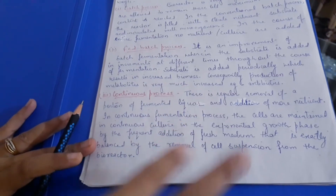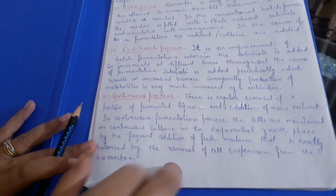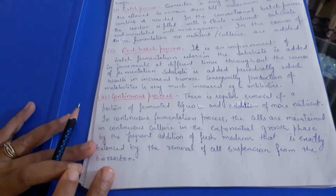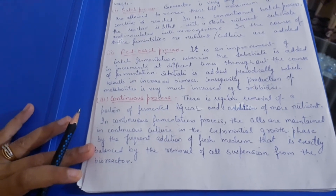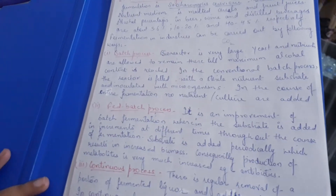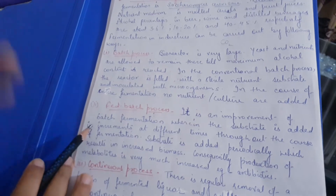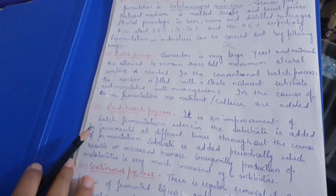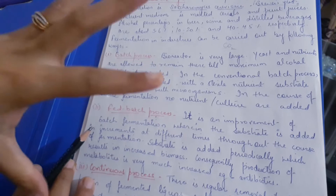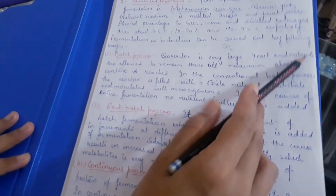In the fed-batch process, during the running process you can add things or remove things — that's why it's called fed-batch. You continuously feed substrate or nutrient medium into it, but the product is only taken out at the end. The advantage is that as long as you keep feeding substrate, the process continues and product keeps forming.